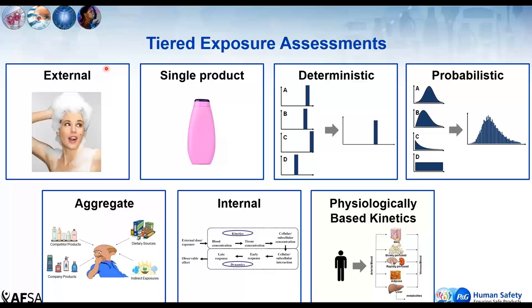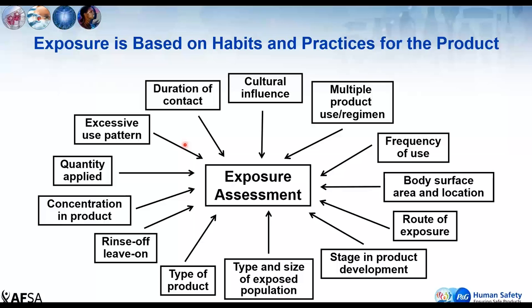We're taking a tiered approach. In a risk assessment context, we start off with a more conservative approach and get more complex only as needed — a law of parsimony where you're as simple as possible but as complex as needed. From an exposure point of view, this means starting with external exposure, then moving through deterministic, probabilistic, and aggregate, and then going from external to internal.